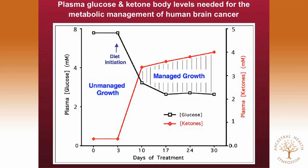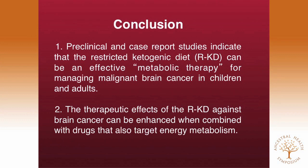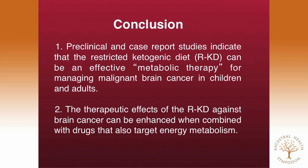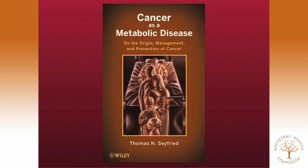The issue is whether this therapy works — and the answer is yes, we can greatly improve outcomes. As long as we can achieve low glucose and elevated ketones, we can put the tumor in a defensive state. Once in that state, we go after the tumor with specific drugs to put additional pressure on the cells. Preclinical and case report studies indicate that the restricted ketogenic diet can be an effective metabolic therapy for managing malignant brain cancer in children and adults, and its effects can be enhanced by combining it with specific non-toxic drugs. I've put all this out in a recent book from Wiley Press discussing many non-toxic therapeutic options for managing cancer. Thank you.